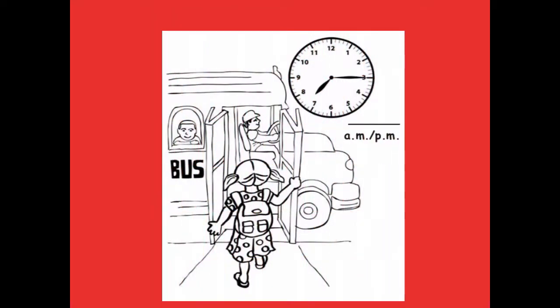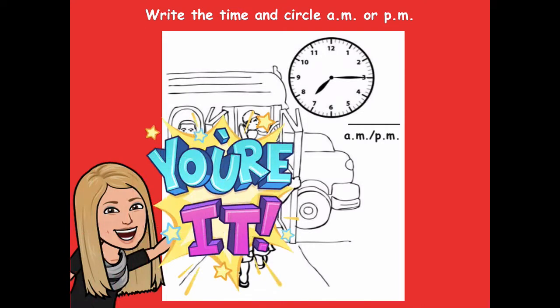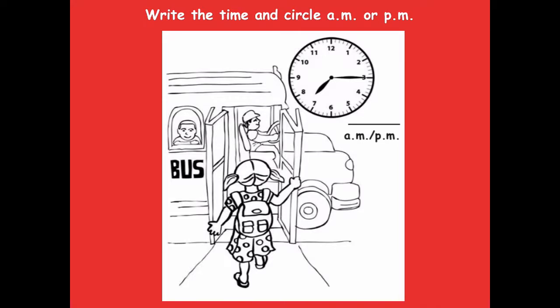What's happening in this picture? It looks like she's getting on the bus — she's not getting off, she's getting on. Think about when that happens. I think she's getting on the bus headed to school. Pause the video, write the time, and circle AM or PM. My hour hand is between the 7 and 8, so we're in the 7 o'clock hour. The minute hand is pointing to the 3 — count by 5s: 5, 10, 15. The time is 7:15 AM.